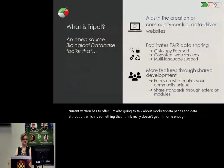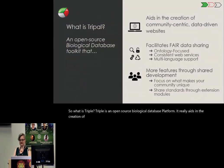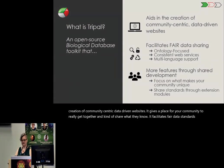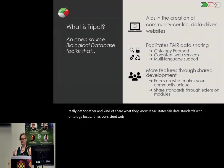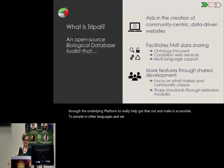So what is TRIPLE? TRIPLE is an open source biological database platform. It really aids in the creation of community-centric, data-driven websites. It gives a place for your community to get together and share what they know. It facilitates FAIR data standards with an ontology focus. It has consistent web services, and language translation support through the underlying platform to really help make it accessible to people in other languages.